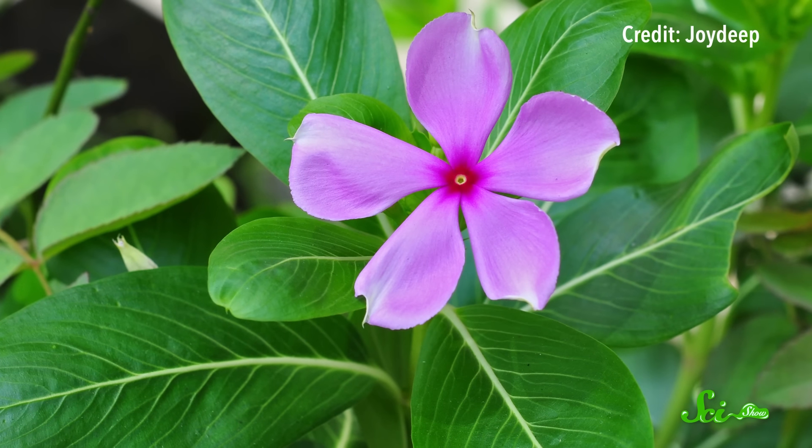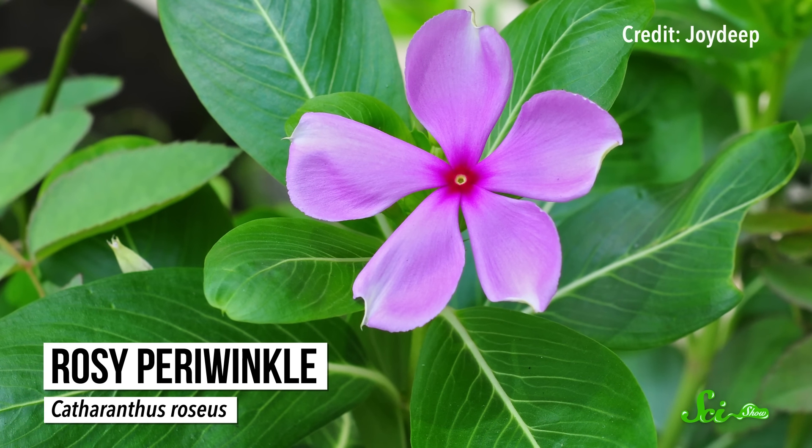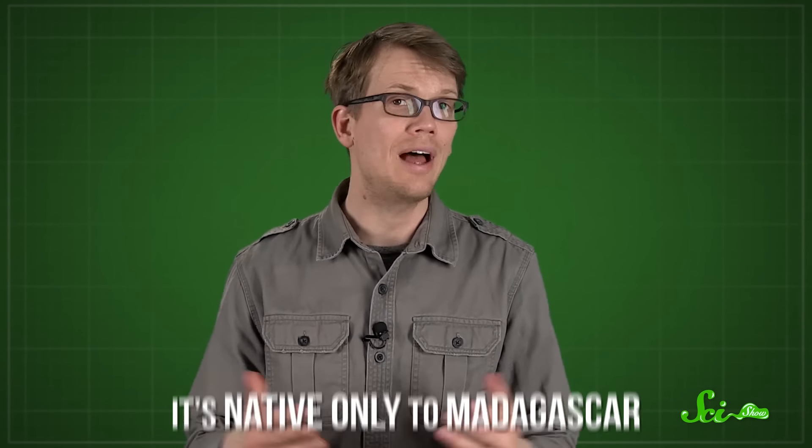Then there's this pretty little thing, the rosy periwinkle. It might look like something that would be right at home in my backyard, but it's actually native only to Madagascar, though it will happily grow anywhere warm. The native people of Madagascar used these periwinkle plants for all kinds of ailments. In the 1950s, researchers from Western pharmaceutical companies studied the periwinkle and discovered that it contained some rather remarkable alkaloids.